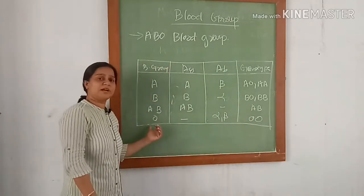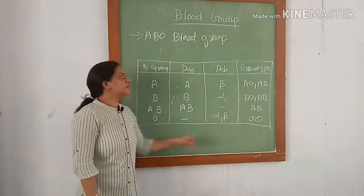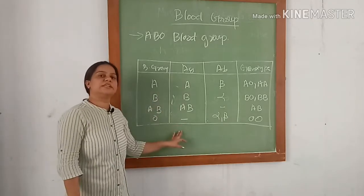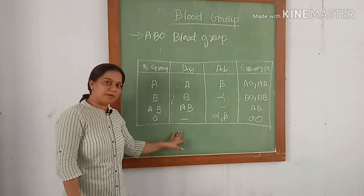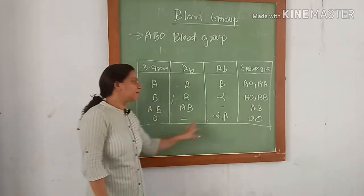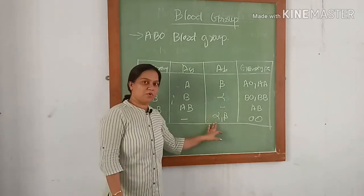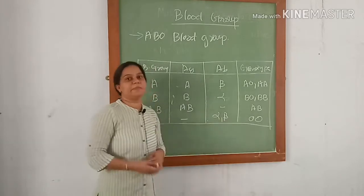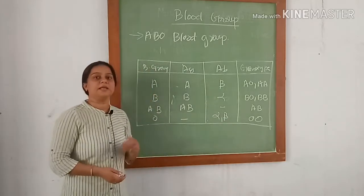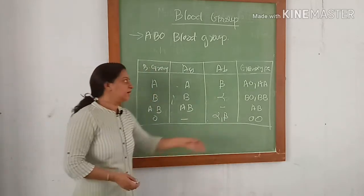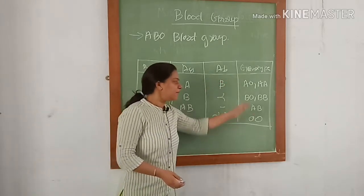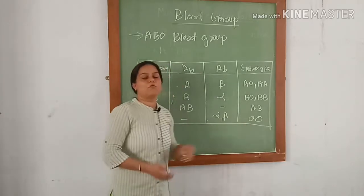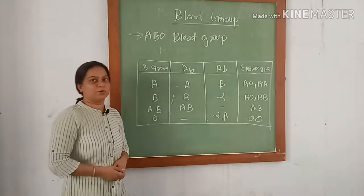The genotype for blood group AB will be AB. For blood group O, there will be no antigen on the red blood cell membrane, and both antibodies alpha and beta will be present in plasma. The genotype will be OO for this blood group.